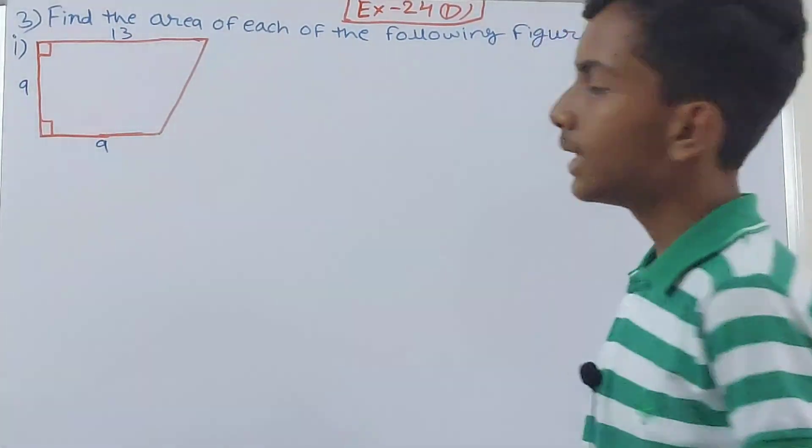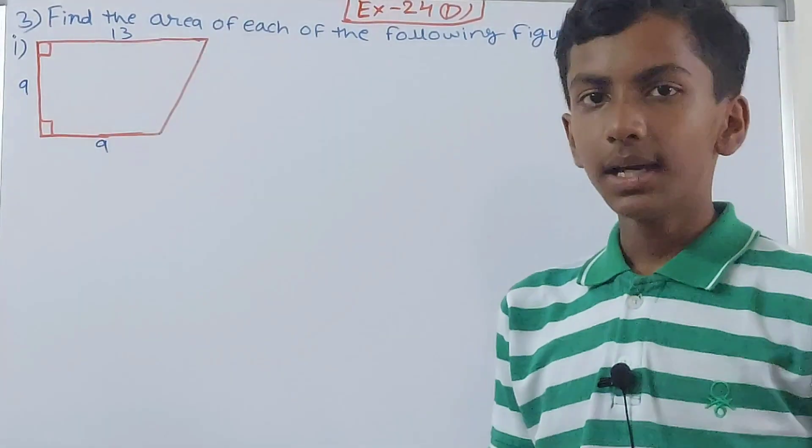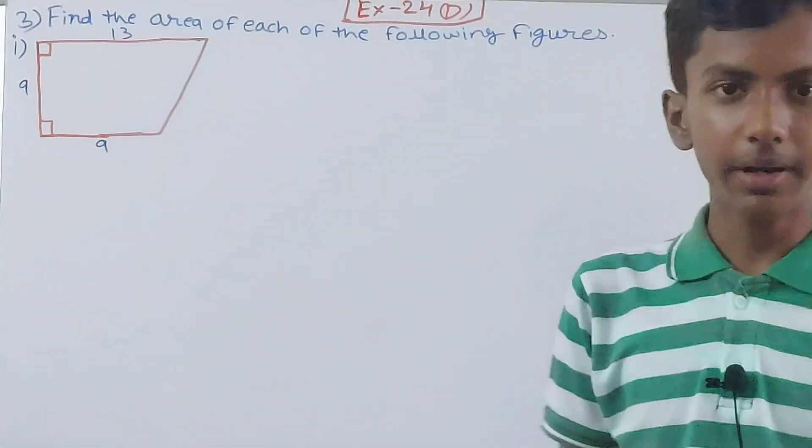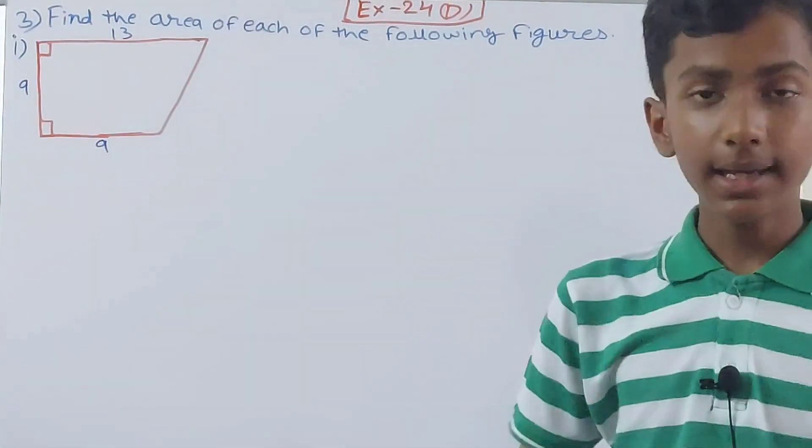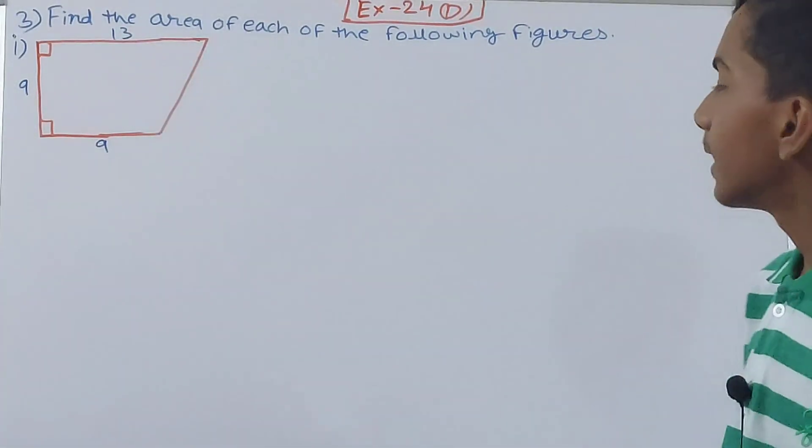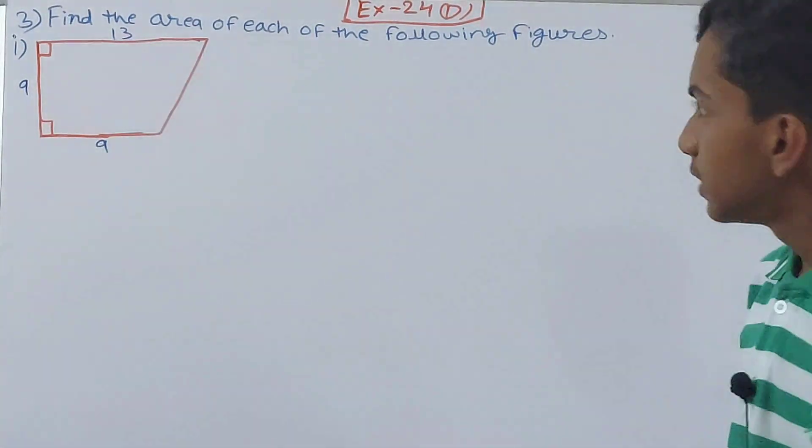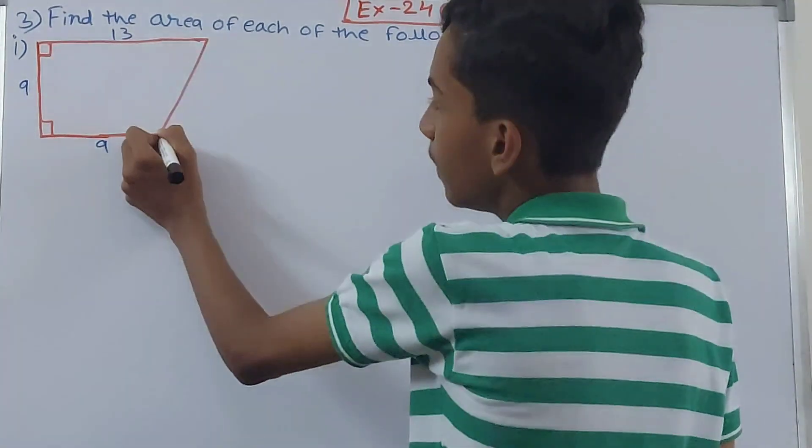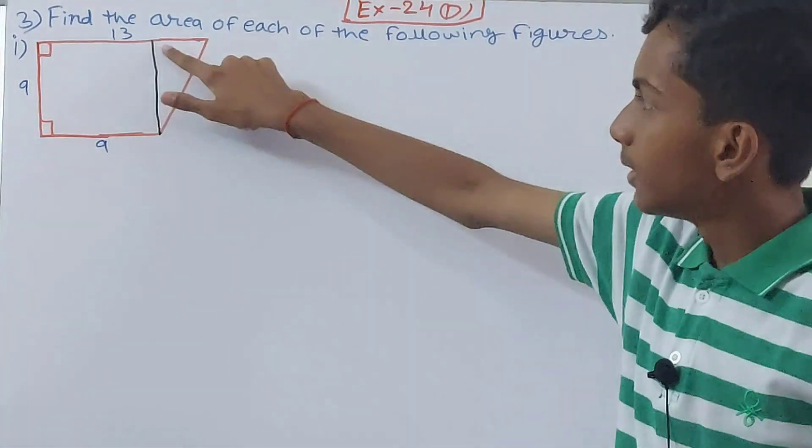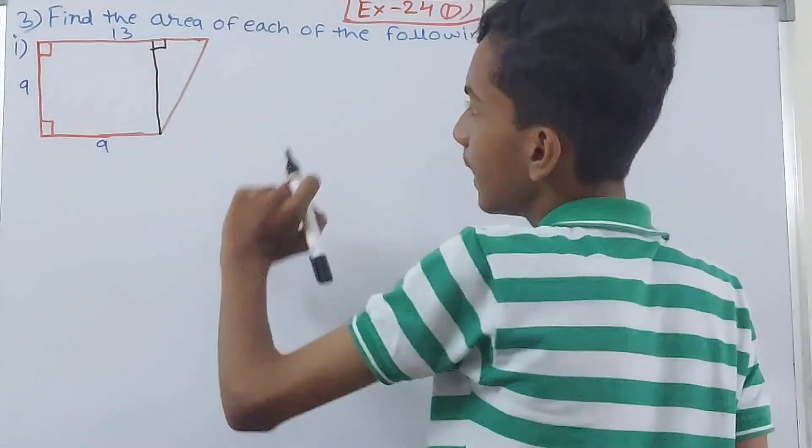So what we'll do here is simply like the previous questions here also we will break the figure into parts. Like this figure, it does not have a particular name but we can make it into parallelograms, triangles, squares like this. Now if I draw a line all the way from 9 here till this point, what do we get here? This is a right angle because this one is also a right angle. And here also right angle.